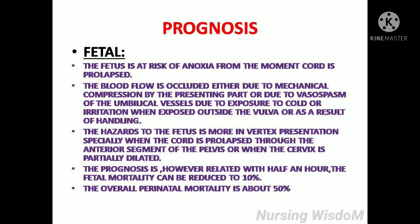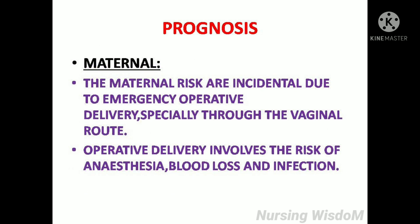Prognosis — Fetal: The fetus is at risk of anoxia from the moment the cord is prolapsed. Blood flow is impeded due to mechanical compression by the presenting part, vasospasm of the umbilical vessels due to exposure to cold or irritation when exposed outside the vulva, or as a result of handling. The hazards to the fetus are greater in vertex presentation. Fetal mortality can be reduced to 10%, but the overall perinatal mortality is about 50%. Maternal prognosis: Maternal risks are due to emergency operative delivery, involving risks of anesthesia, blood loss, and infection.